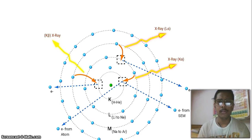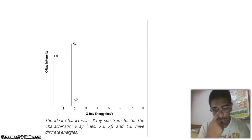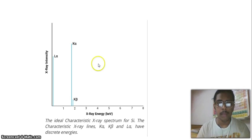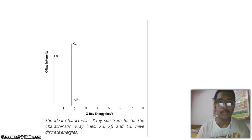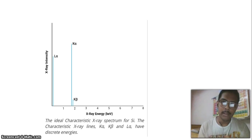K, L, M nomenclature comes from where the gap was formed. Now looking at a typical spectra from a silicon atom: this shows the characteristic X-ray of silicon, which includes K-alpha, L-alpha, and K-beta. K-alpha and K-beta indicate the gap was formed in the K shell, with alpha being intense and beta being low intensity. L-alpha means ionization happened at the L shell and some higher energy electron came to fill that gap.